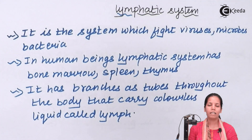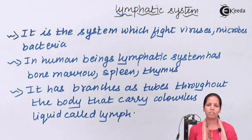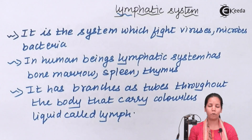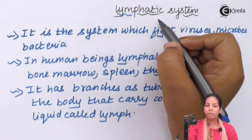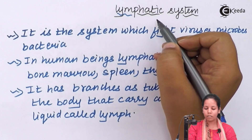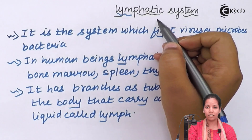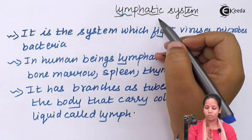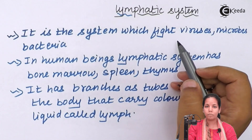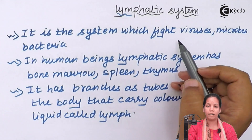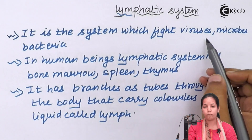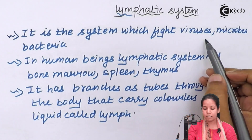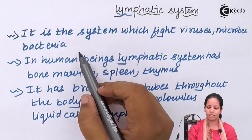Simply put, the lymphatic system is the fighting mechanism of the body. It kills harmful substances like viruses, certain kinds of microbes or bacteria. The lymphatic system in human beings protects us from harmful foreign antigens and substances that are very detrimental to our health, including harmful microbes, viruses and bacteria.